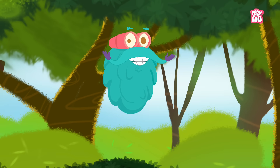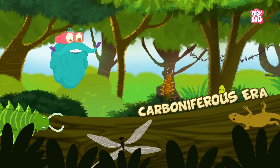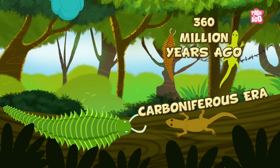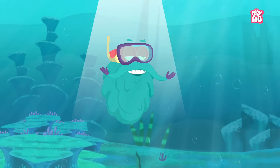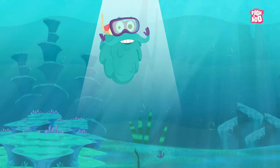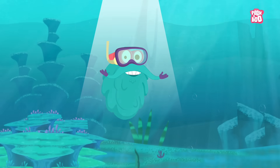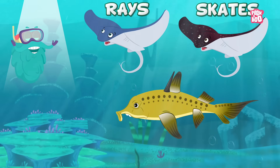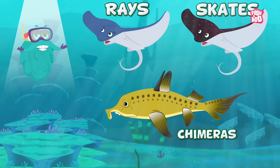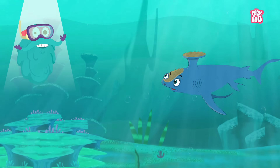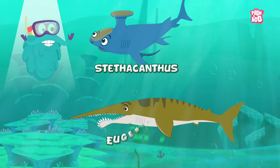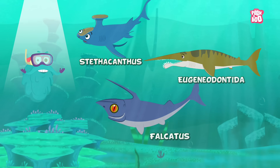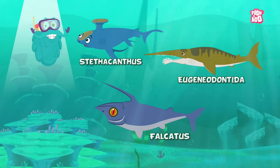Then began the golden age of sharks — the Carboniferous era, around 360 million years ago. Sharks started to dominate the oceans like never before as they began to split into many subspecies, including rays, skates, and chimeras. Strange and new species of sharks like the Stethacanthus, the Eugeneodontida, and the Falcatus — nicknamed the Unicorn Shark — evolved during this period.